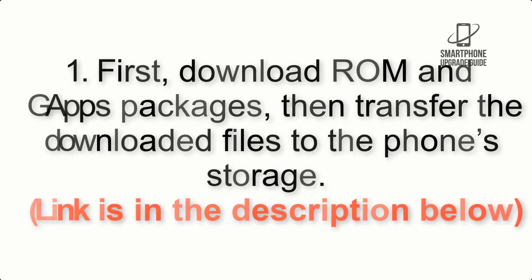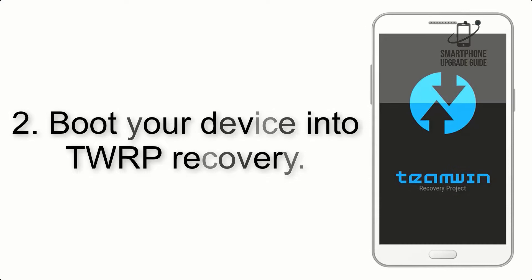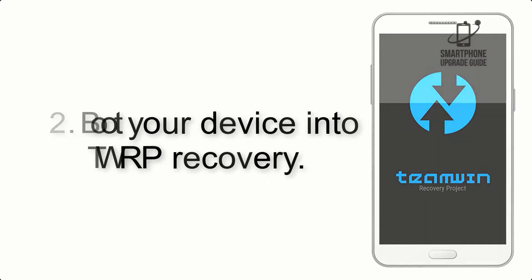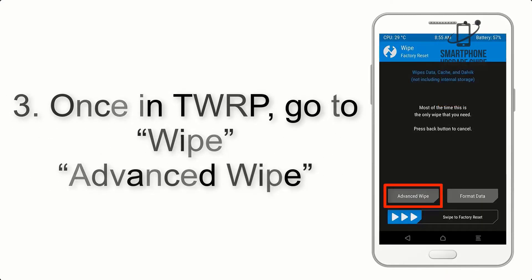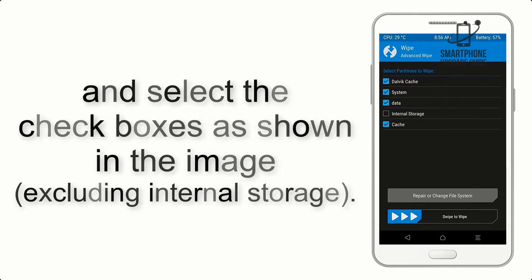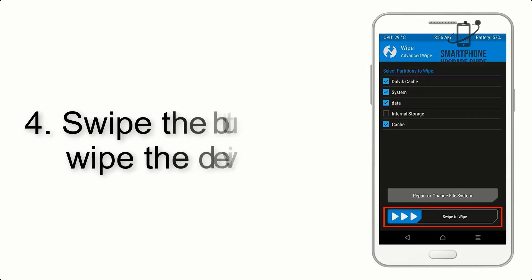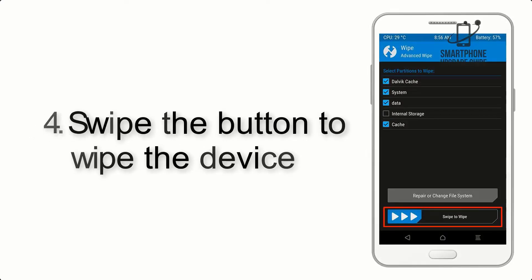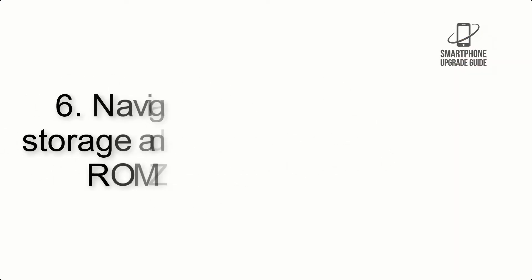Step 2: Boot your device into TWRP recovery. Once in TWRP, click on Wipe, then Advanced Wipe, and select the checkboxes as shown in the image, excluding internal storage. Step 4: Swipe the button to wipe the device.